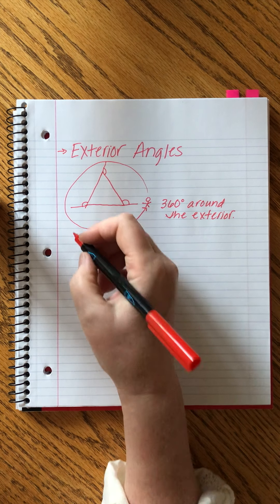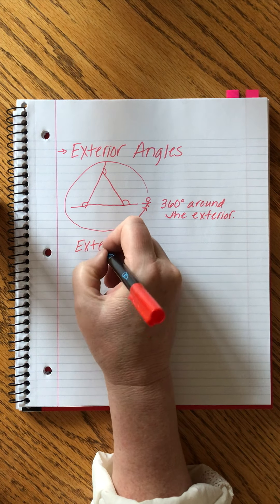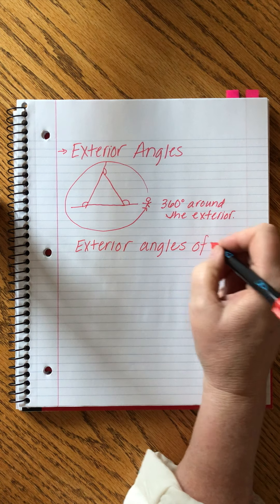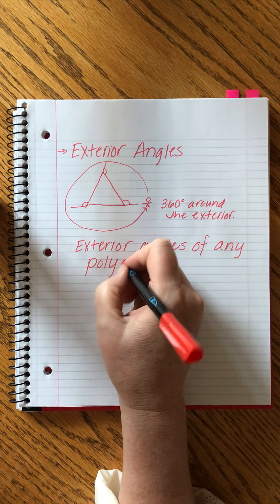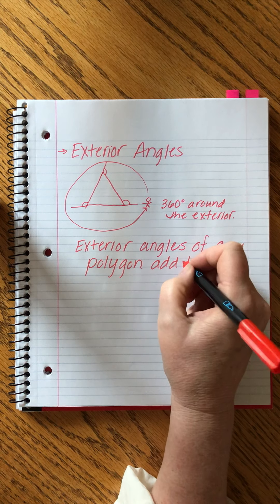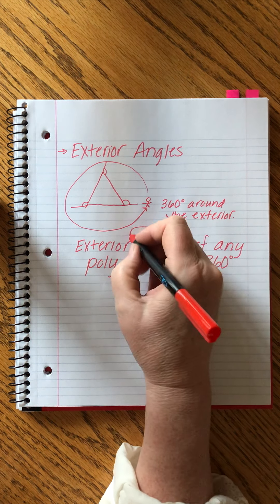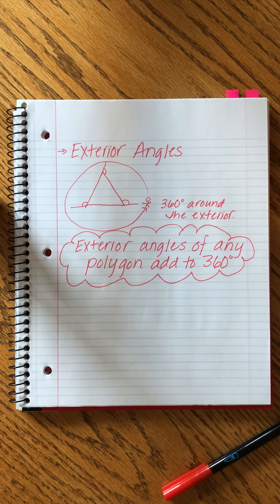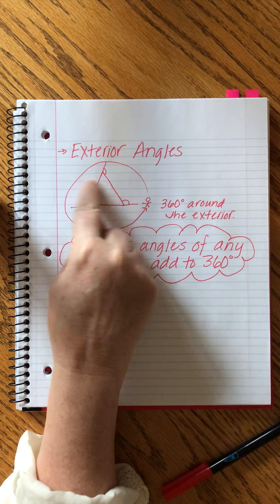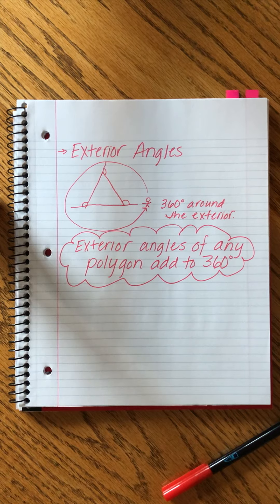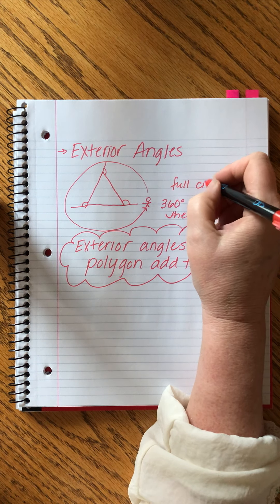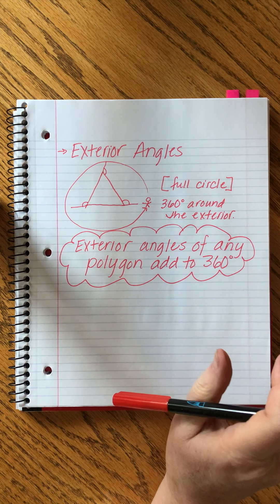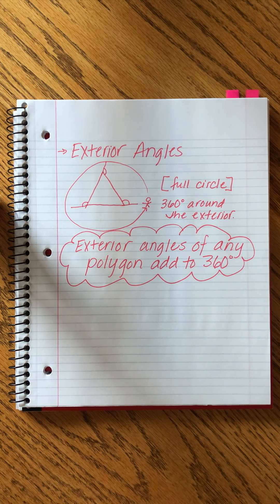It'll always be 360 degrees. We're just walking in a full circle around it. The exterior angles of any polygon will always add to 360 degrees. And you can remember it by thinking no matter how many sides this has, once I walk all the way around it, I've gone the full circle. Sometimes it helps to imagine that circle. And that is 360 degrees. So the exterior angles of any polygon will always add up to 360 degrees.